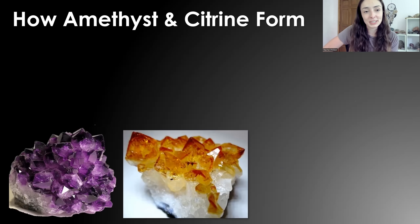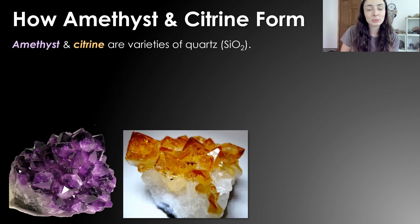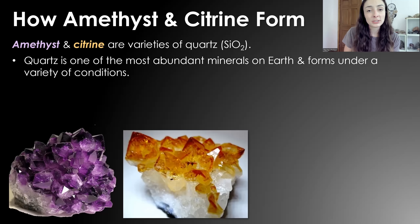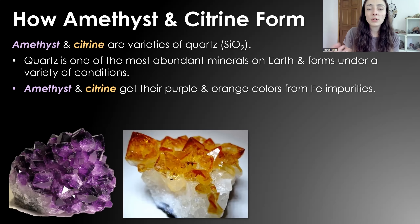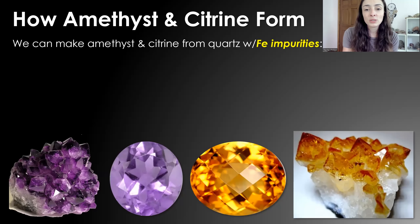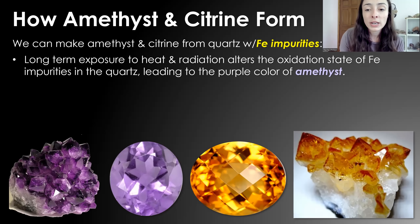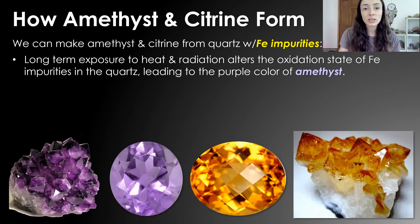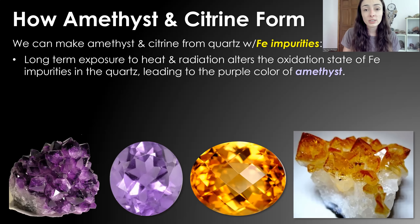Moving on to the next silica-type gemstones: amethyst and citrine. These are both varieties of quartz — silicon dioxide — one of the most abundant minerals on earth, forming under a variety of conditions. Quartz is typically clear, milky, or smoky in color, while amethyst and citrine are purple and orange respectively, due to iron impurities. They often form in hydrothermal veins where fractures in rocks are filled with hot iron- and silica-rich fluids that precipitate amethyst and citrine. We can actually make amethyst and citrine from quartz with iron impurities — long-term exposure to heat and radiation alters the oxidation state of the iron impurities in quartz, leading to the purple color of amethyst. Iron impurities being present doesn't necessarily guarantee amethyst or citrine; the iron might not be in the right oxidation state.